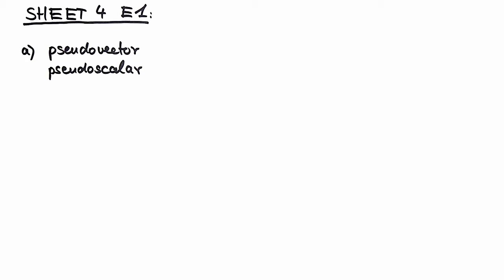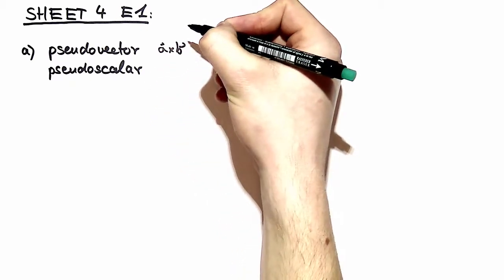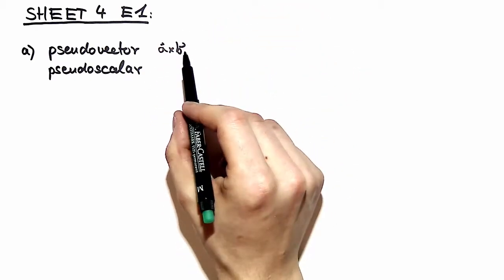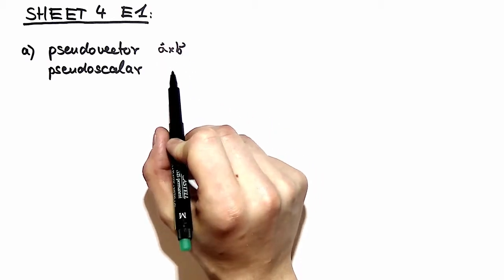In the description of pseudovectors, you see that it is invariant under rotation and doesn't change sign upon inversion. This is the property of an area. Recall the definition of a cross product: a cross b. This is the positive area of a rectangle and is indeed a pseudovector.